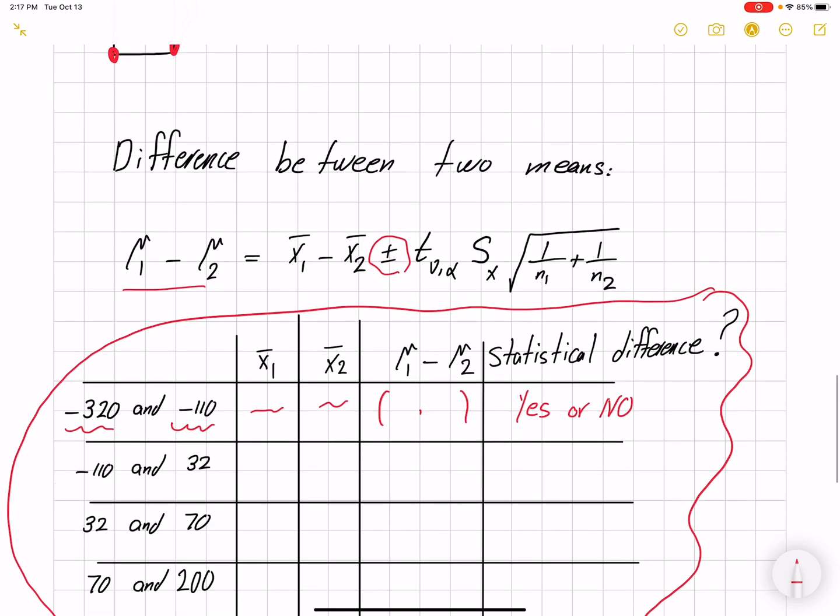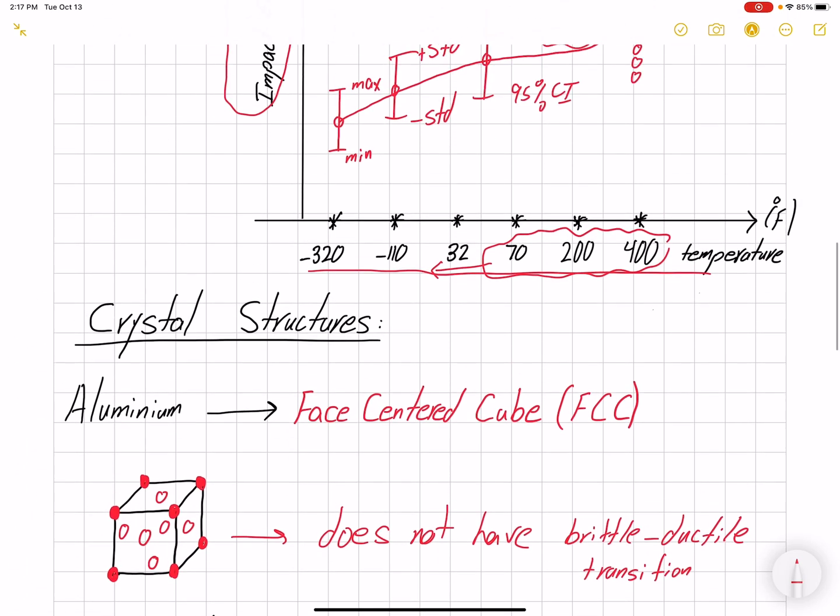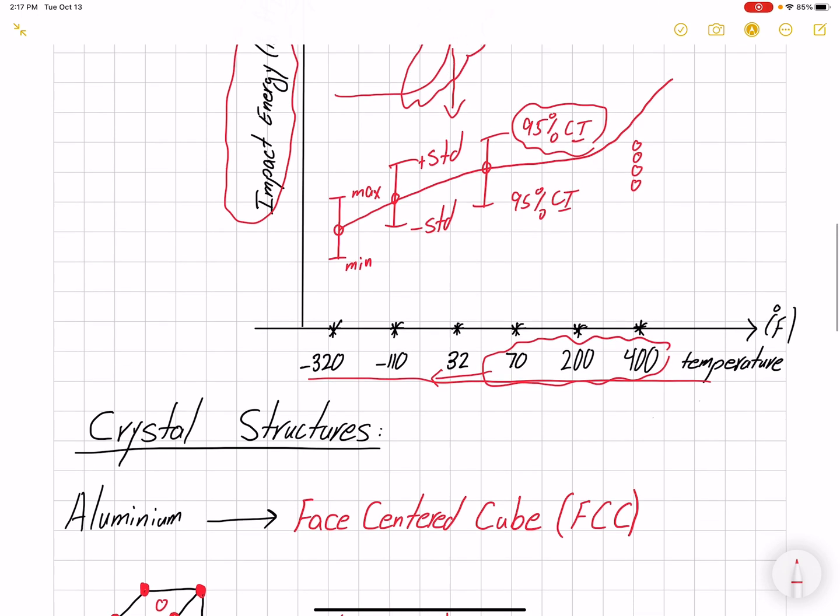Because looking at the graph, we can't simply visually inspect to see whether we have any statistical difference moving from this temperature to another temperature. We need to do statistical analysis. The difference of two means is the right statistical analysis to find whether the difference between two sets of data points is significant enough that we could tell something is happening moving from one temperature to another.